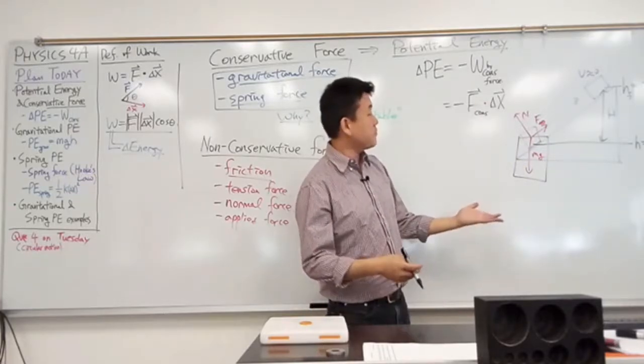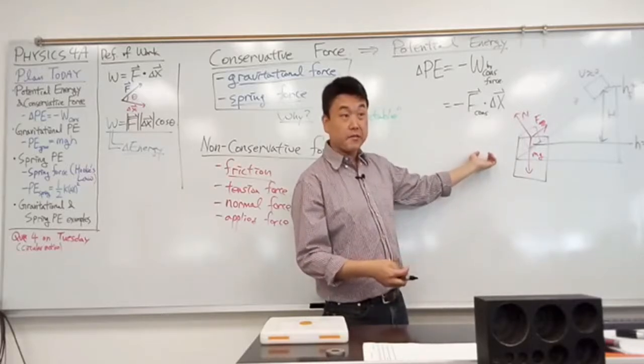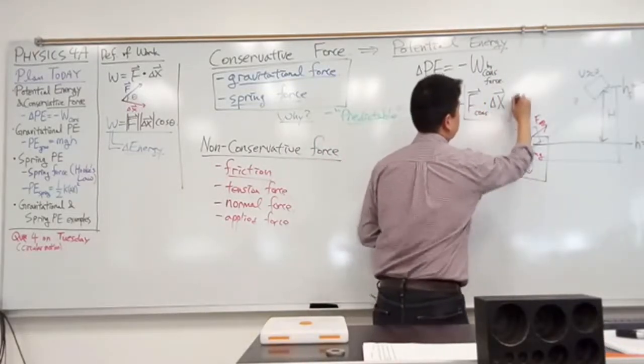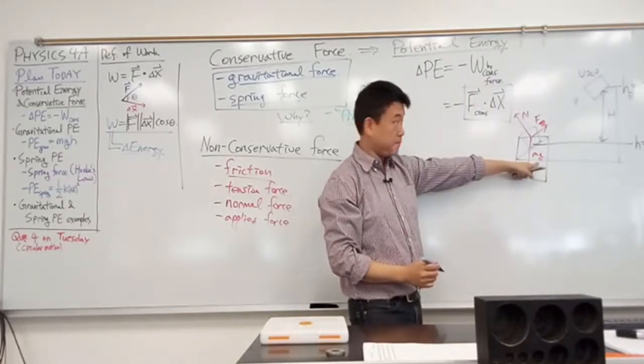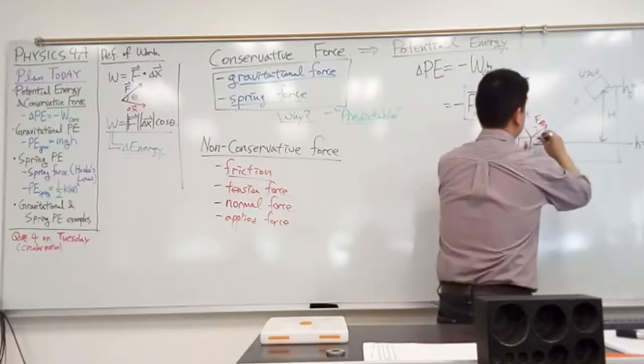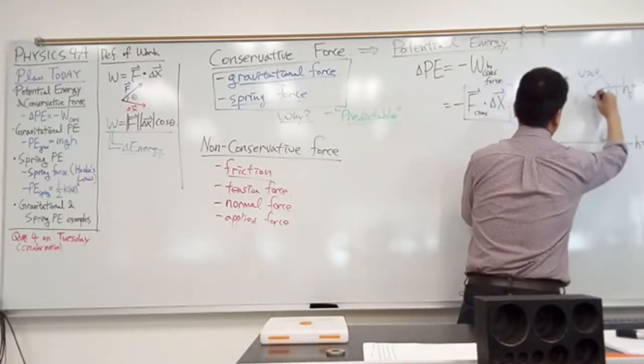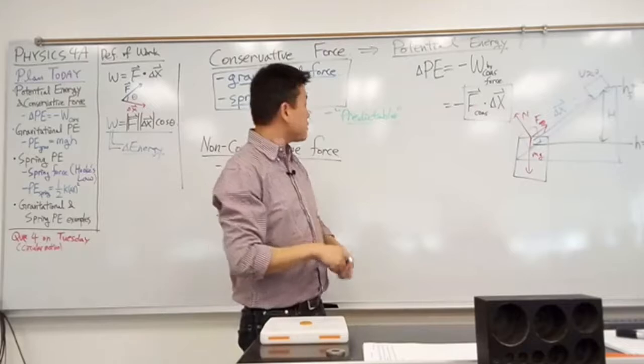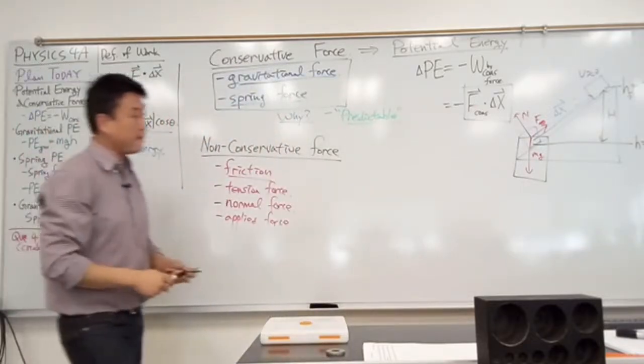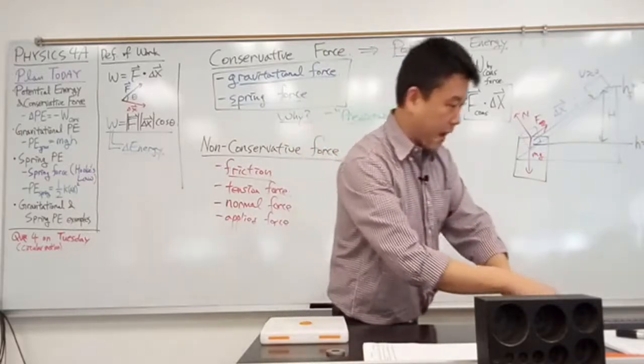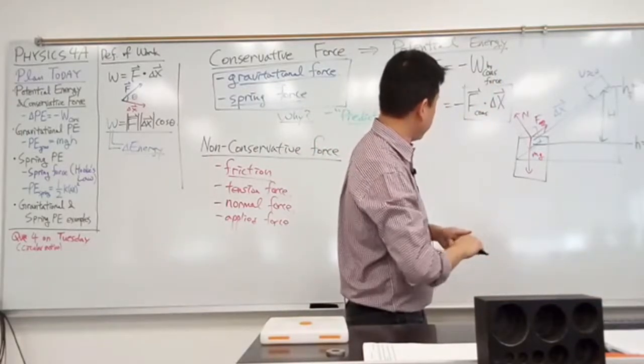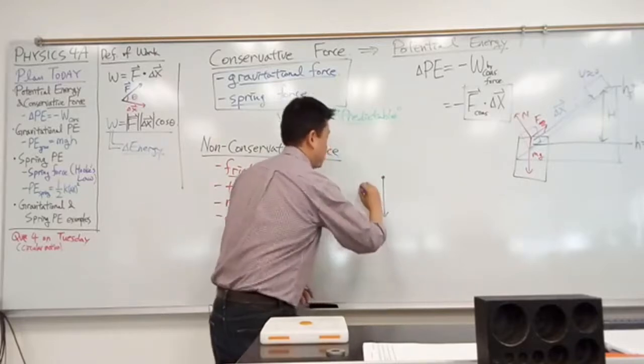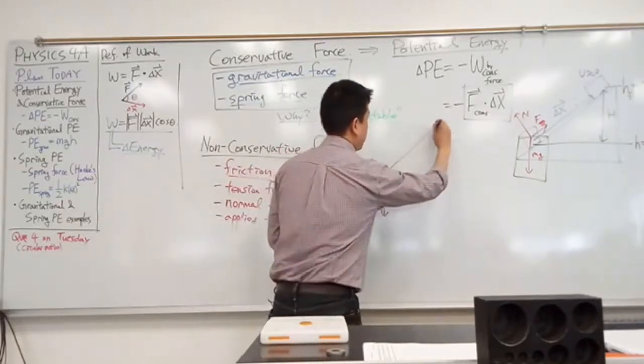How much work is being done by gravitational force? So I guess the easiest thing to do is actually just go through the math and calculate it. So we want to calculate this expression here, dot product between the conservative force, gravity, and the displacement. The displacement vector here would be something that looks like this. This would be my displacement vector.